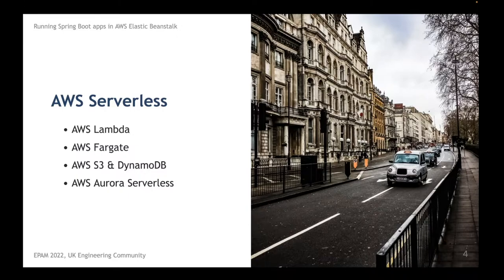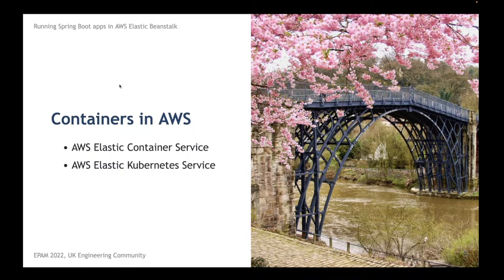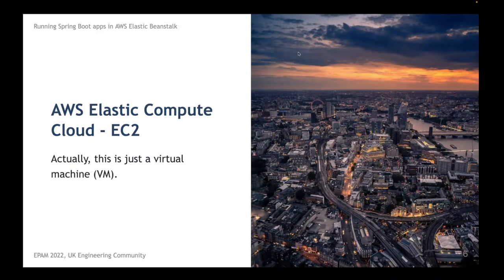AWS provides us not only with compute options but also with serverless storage. S3 and DynamoDB are the most famous options for storage. Containers are also useful — last time we used ECS, but it's also possible to use EKS to run containers in the cloud. Kubernetes is really the same both in cloud and locally. Today we will talk about Elastic Compute Cloud, or just EC2.